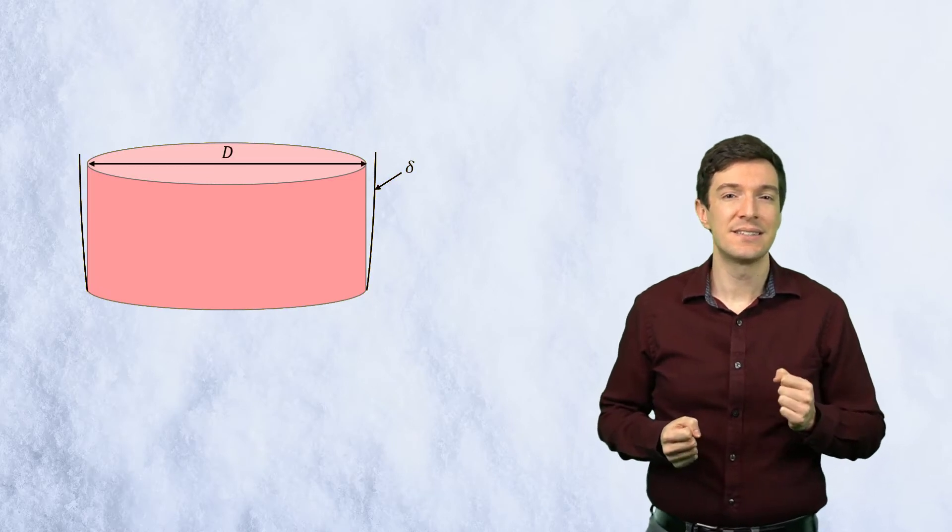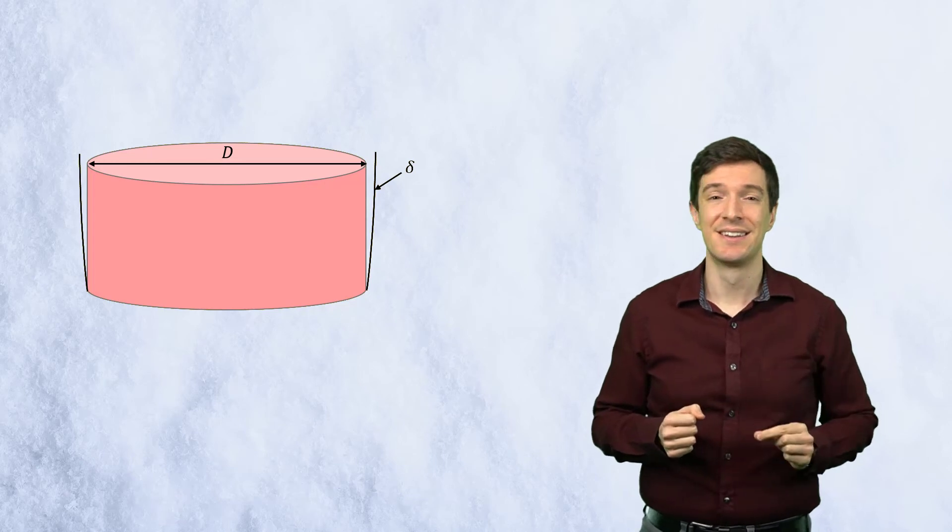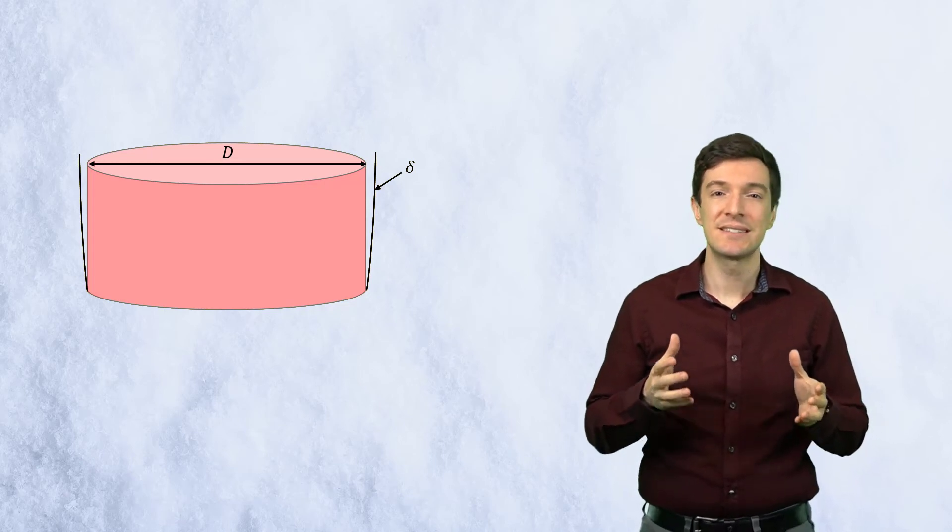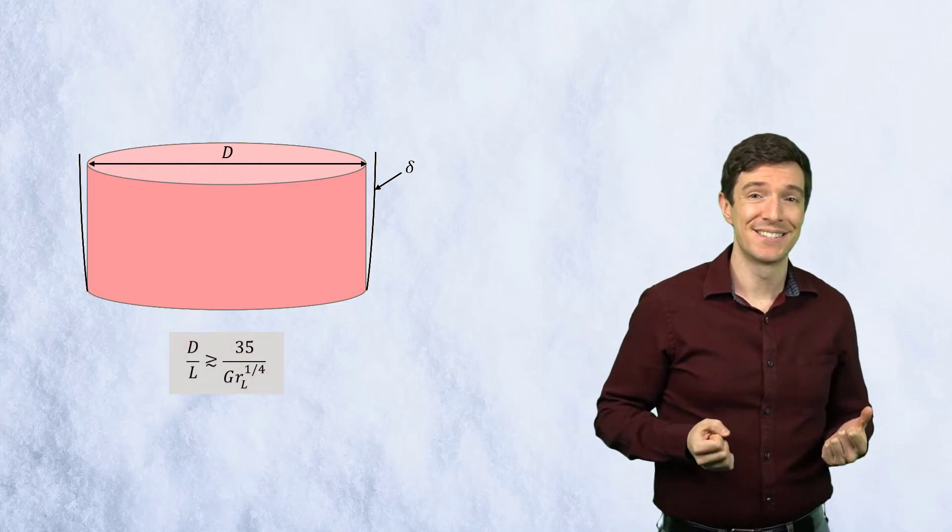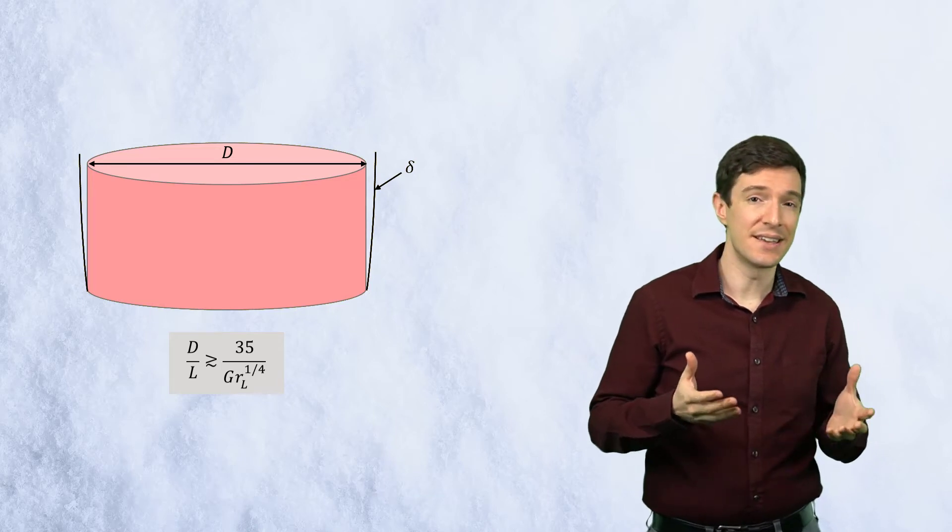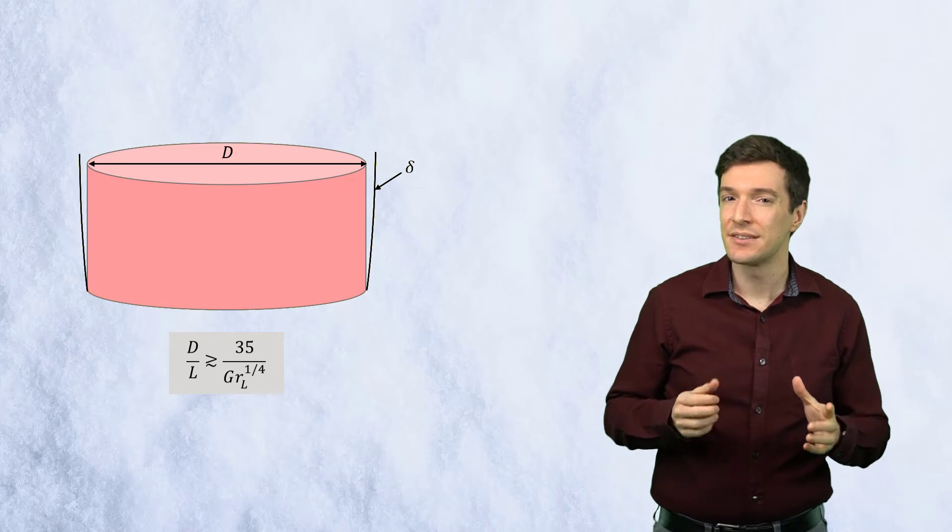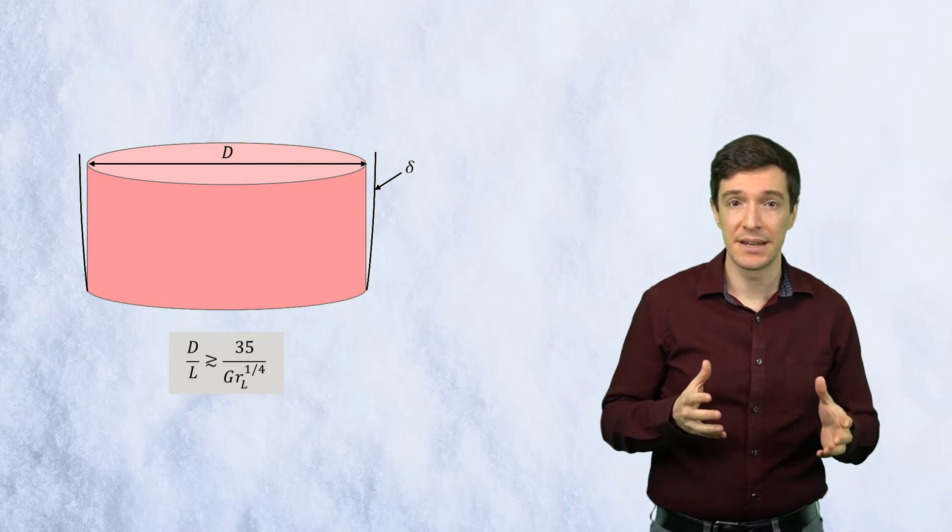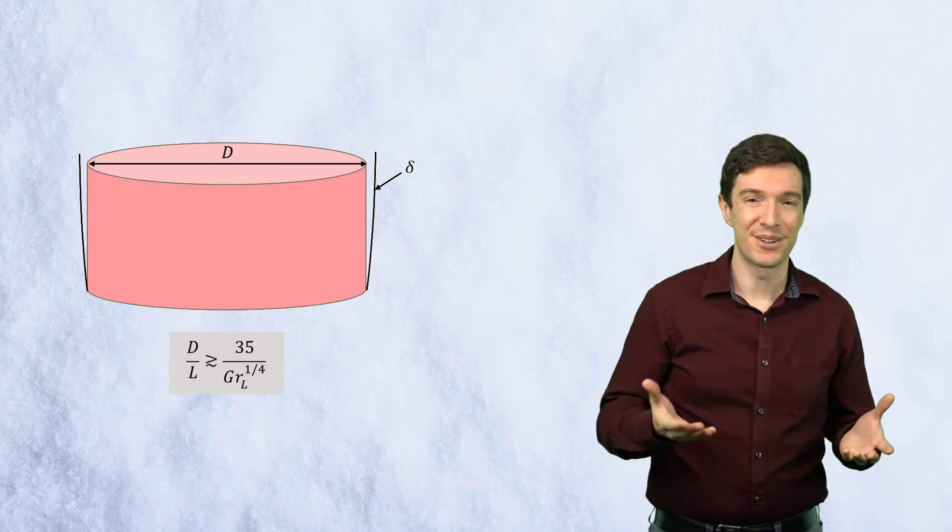The correlations could also be applied for vertical cylinders, as long as the diameter is much larger than the boundary layer thickness. This condition is satisfied if this relation is true. L is the cylinder height and D is the diameter. When the cylinder is too slender, the curvature affects the boundary layer growth and enhances the heat transfer due to natural convection.